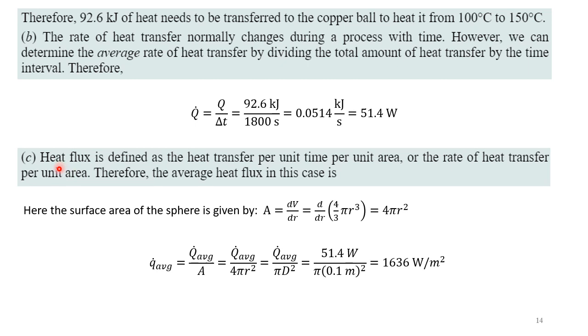Part C asks for the heat flux. So now to know the heat flux, you have to know what the area is. And so for a sphere, you're talking about the surface area. So one way to find the surface area, it's basically surface area is the derivative of volume with respect to R, dV/dR. So the volume of the sphere is four thirds pi R cubed. Take the derivative of this with respect to R and you get 4 pi R squared.